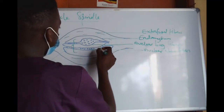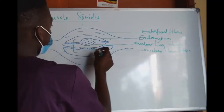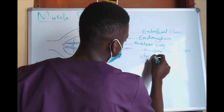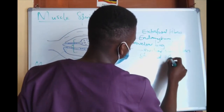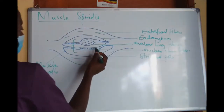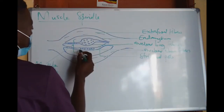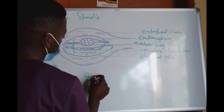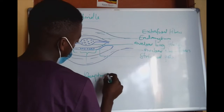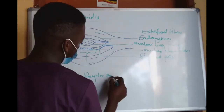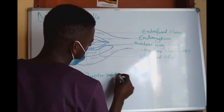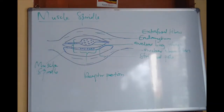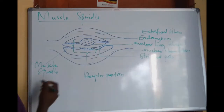We shall talk about the striated ends — like this one here — at the striated end. And we have several nuclei right here which form what we call the receptor portion, the central receptor portion. That is the muscle spindle. This is the tendon, and these are the intrafusal fibres.